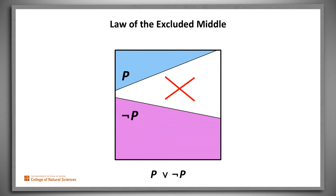The Law of the Excluded Middle tells us that given any logical statement p, p is true or not p is true. It's important to note that the Law of the Excluded Middle tells us that every logical statement has a truth value — it is true or false. It does not guarantee that you or I or anyone else actually knows what that truth value is.